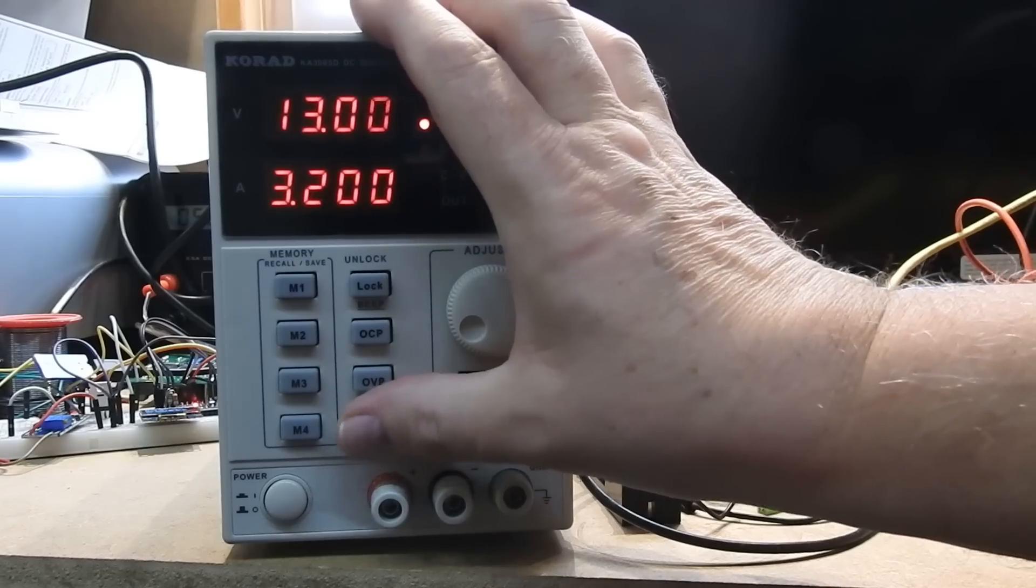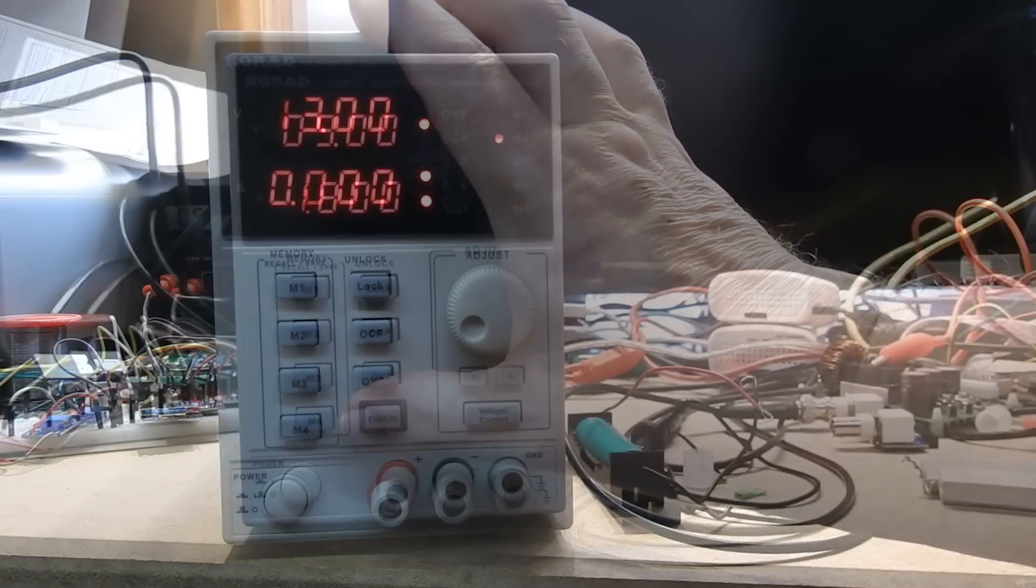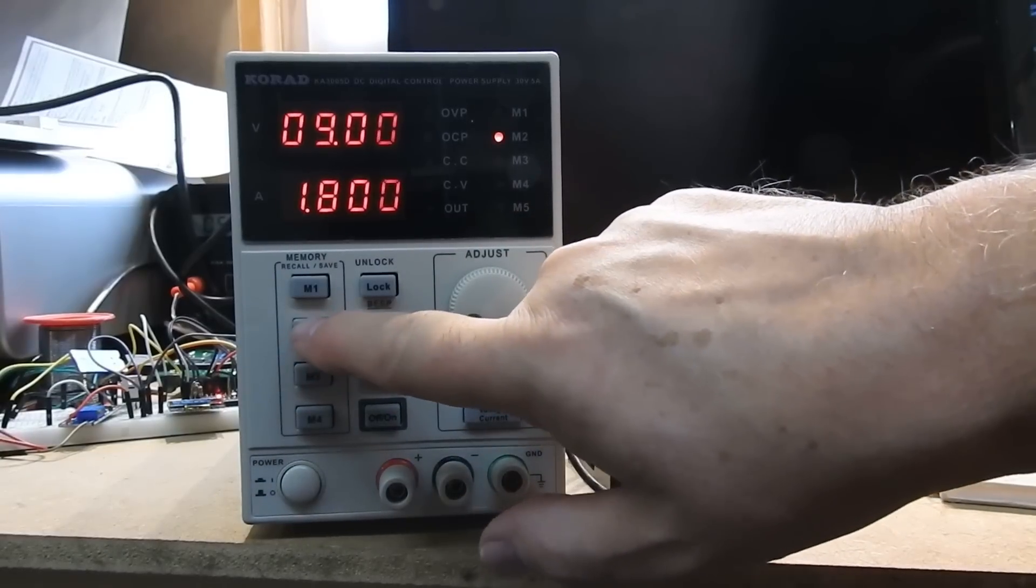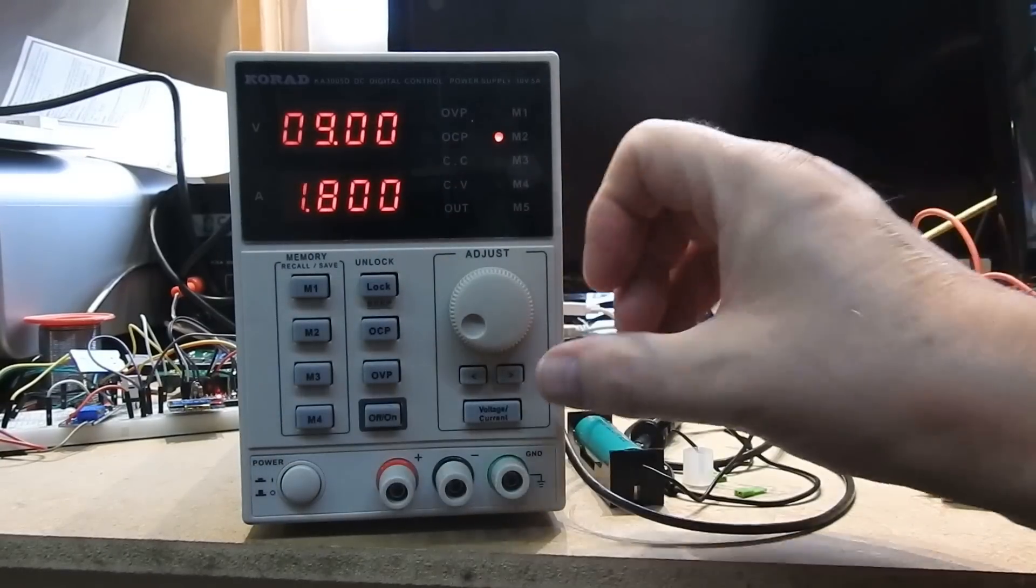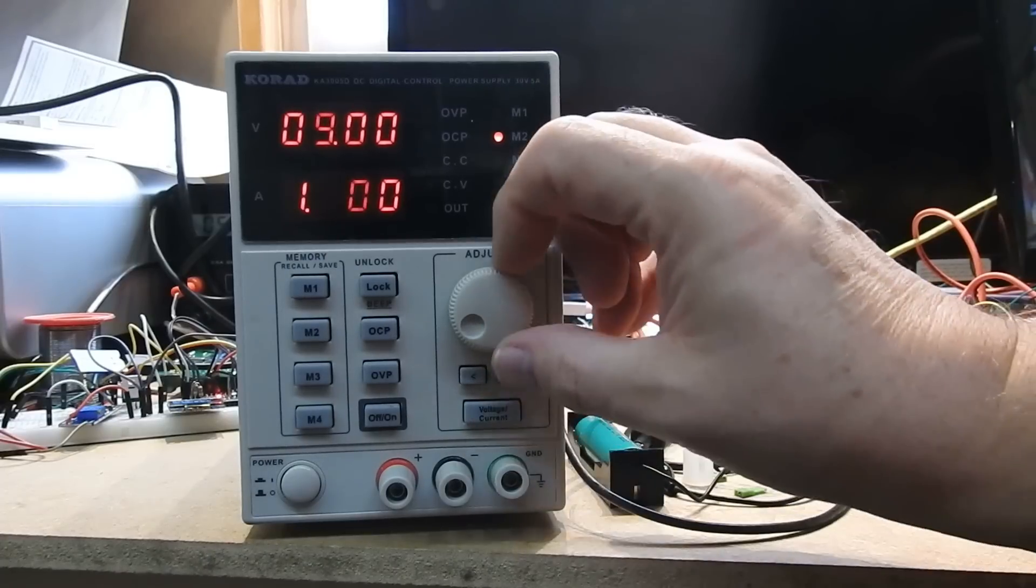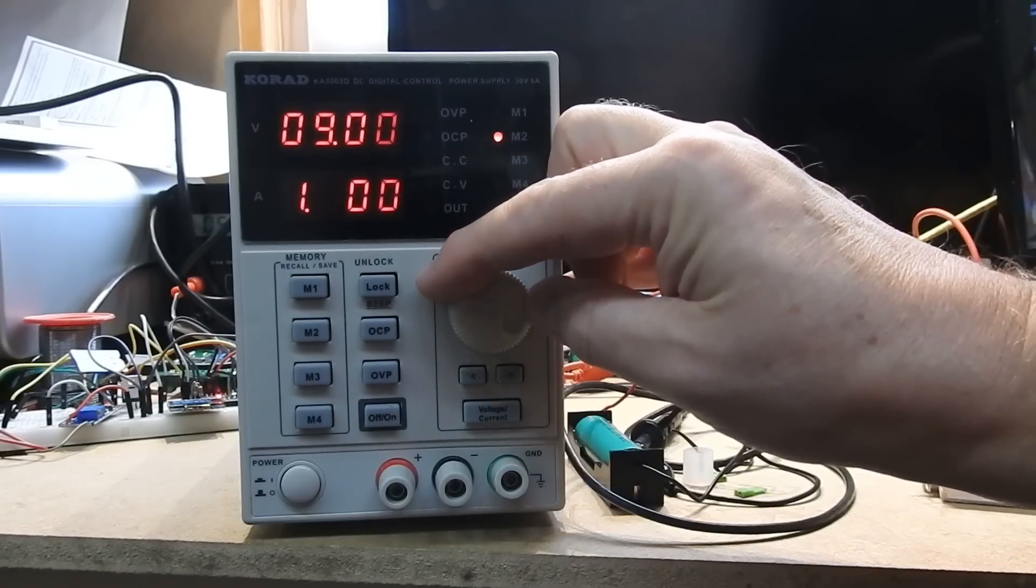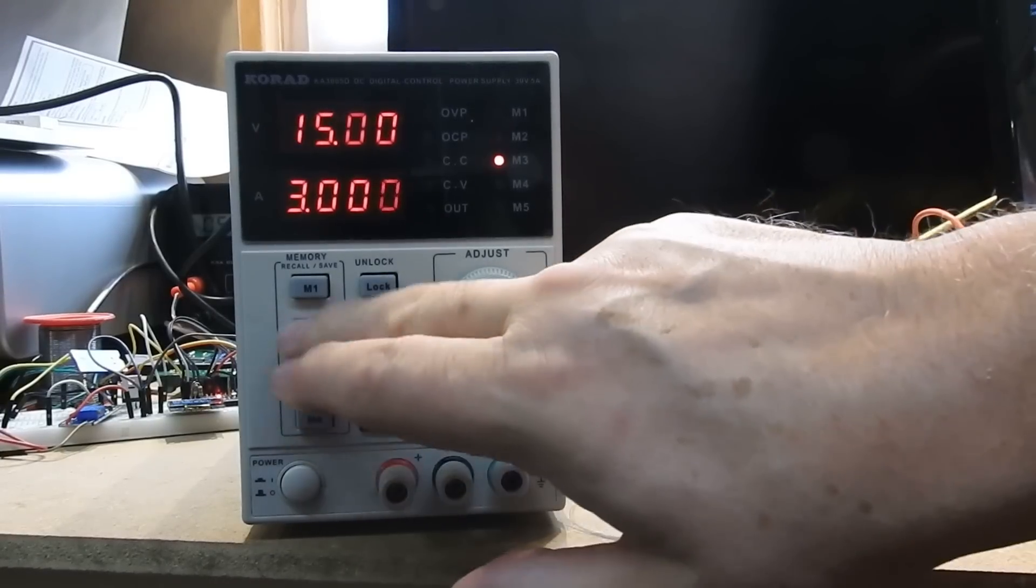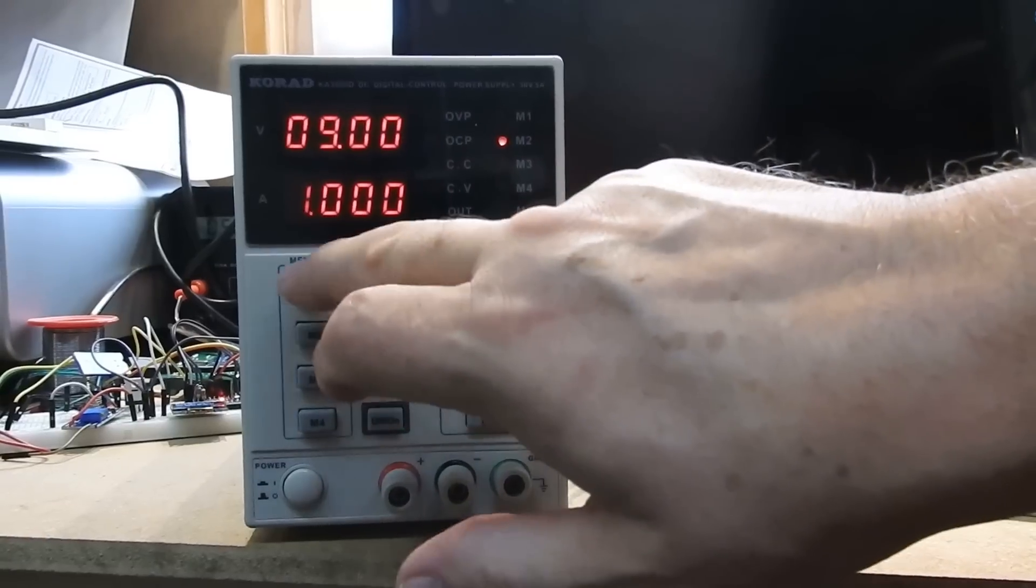So now what I want to do is try out these memories. And it turns out, after a bit of fiddling about, that they're actually quite easy to do. You set the current and voltage that you're after, you simply hold the memory button in and it's stored.